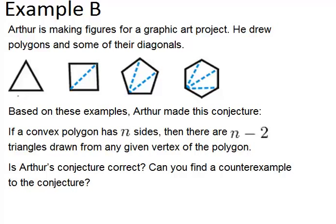So for example, this would be n equals three. Three sides, four sides, five sides, six sides. He's saying there are always n minus two triangles.